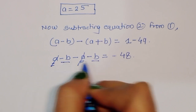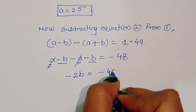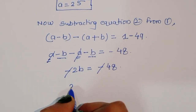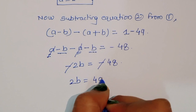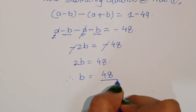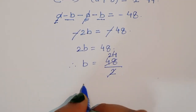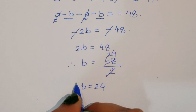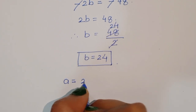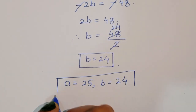Here a and minus a cancel. Minus b minus b gives minus 2b, which equals minus 48. The negatives cancel from both sides, giving 2b equals 48. Therefore b equals 48 divided by 2, which equals 24. So from the first factor pair, we get a equals 25 and b equals 24.